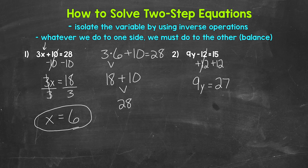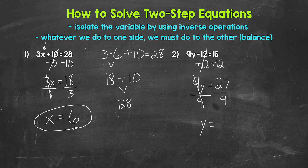We're multiplying y by 9, and we need to undo that multiplication using the inverse operation. The inverse operation of multiplication is division. So let's divide the left side by 9 — whatever we do to one side, we must do to the other — so divide the right side by 9 as well. On the left side, we are multiplying by 9 and dividing by 9, so these 9s cancel each other out. Our variable y is now isolated. So y equals 27 divided by 9, which gives us 3. y equals 3, and that's our solution.